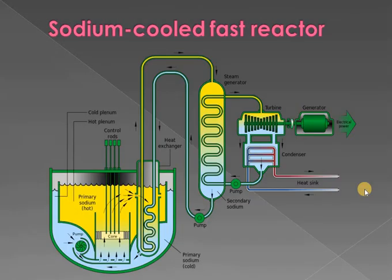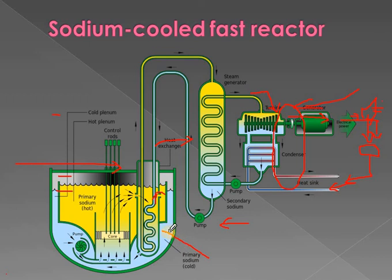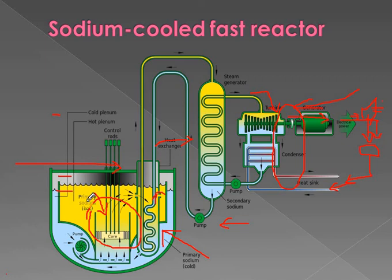Next, we look at the sodium-cooled fast breeder reactor. The difference between the gas-cooled and sodium-cooled reactor is very small: here, liquefied sodium is used as the coolant instead of gas. As seen in the diagram, primary sodium is passed into the reactor core where a chain reaction is already taking place due to the fuel rods. The sodium gets heated, becomes hot primary sodium liquid, passes into the heat exchanger, and is further heated before passing into the steam generator.